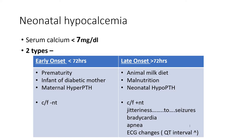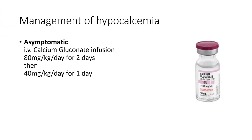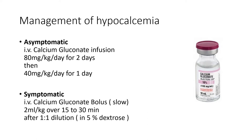Management of asymptomatic hypocalcemia involves IV calcium gluconate infusion at 80 mg/kg/day for 2 days, then 40 mg/kg/day for one day. In symptomatic cases, symptom control measures are initiated along with IV calcium gluconate given as a slow bolus: 2 mL/kg over 15 to 30 minutes after 1:1 dilution in 5% dextrose.